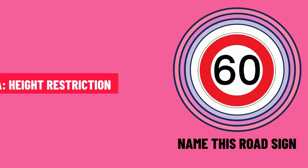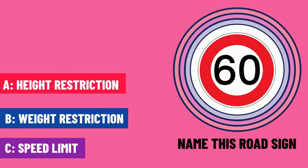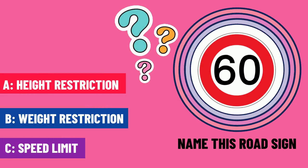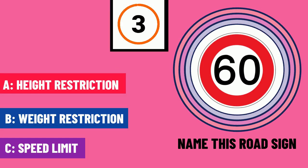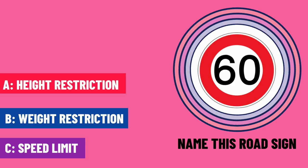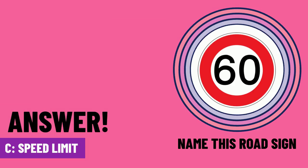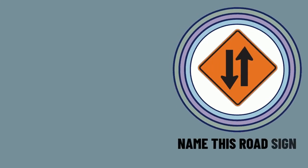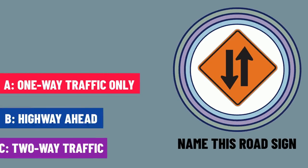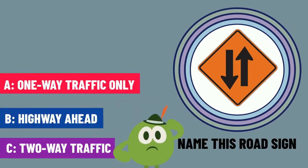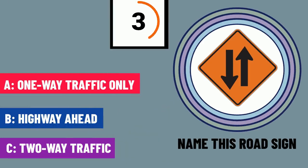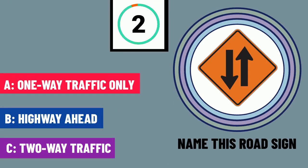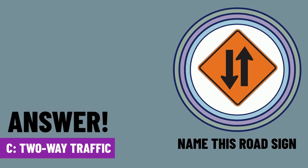Question 4. Name this road sign. The correct answer is C — speed limit. Question 5. Name this road sign. The correct answer is C — two-way traffic.